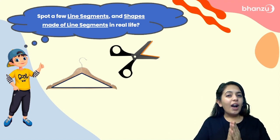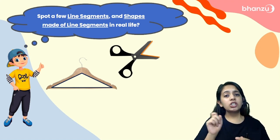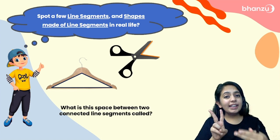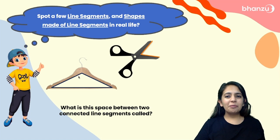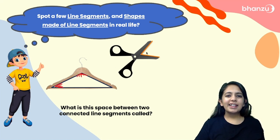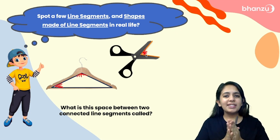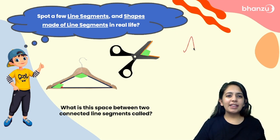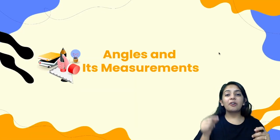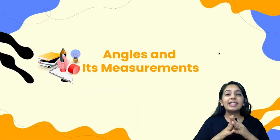By the end of the last class, I asked you a question: what is the space between two connected line segments called? For example, here are two connected line segments — what is the space between them called? We can take these two line segments in case of a scissor. My dear, this space is called an angle, and in today's class we are going to learn about angles and their measurements in detail.